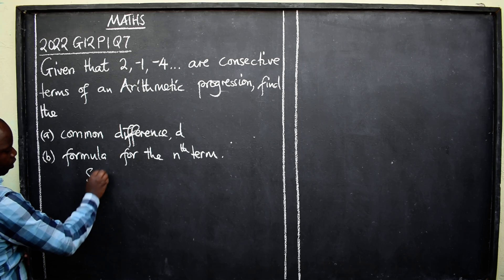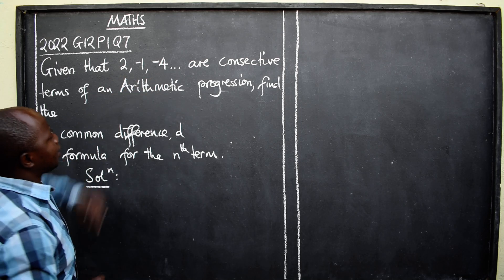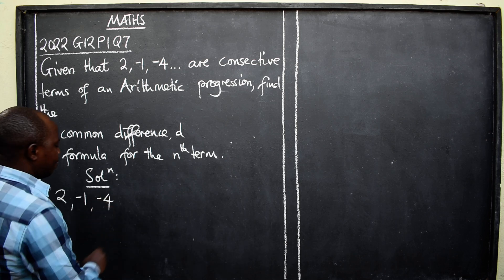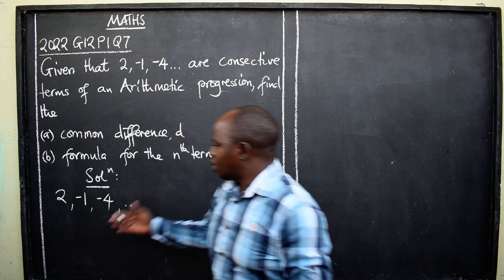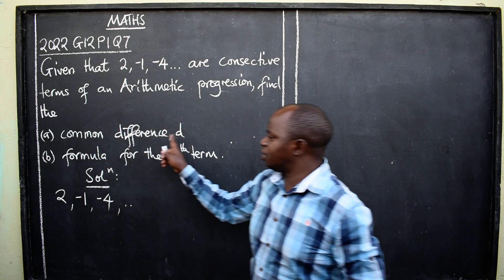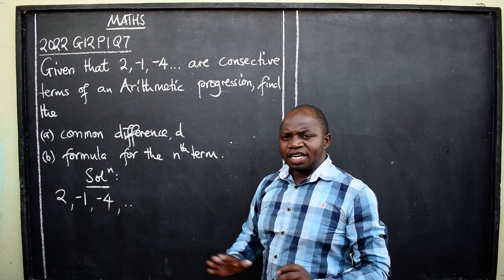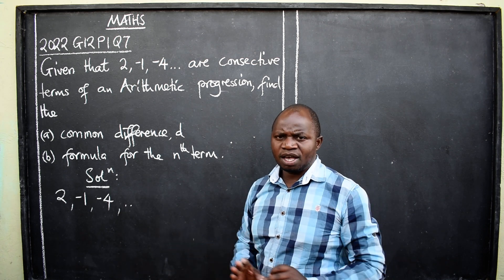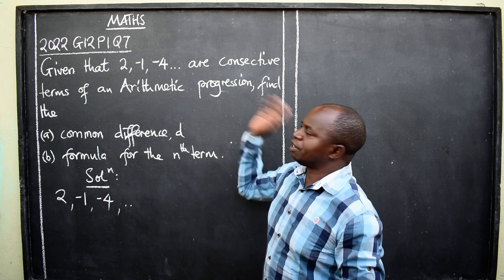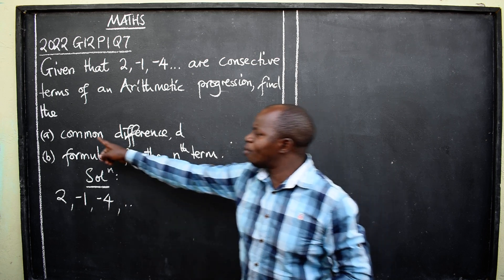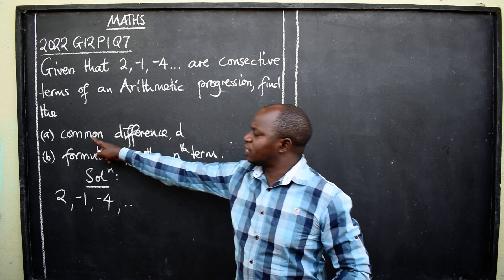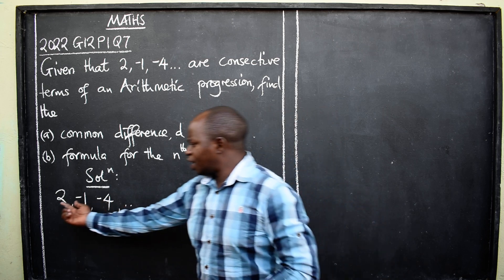So we're going to write the solution. The sequence that has been given is: 2, negative one, negative four. These are the three consecutive terms of this AP. Any sequence that has a common difference is called an arithmetic progression. How do we find this common difference?